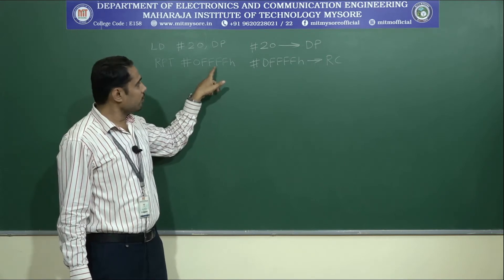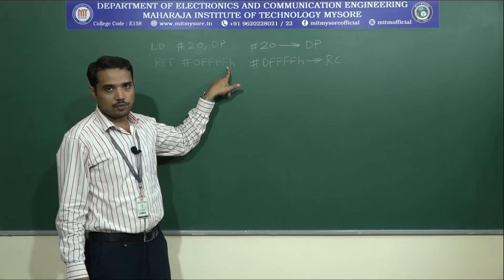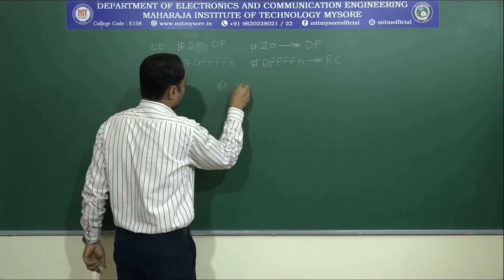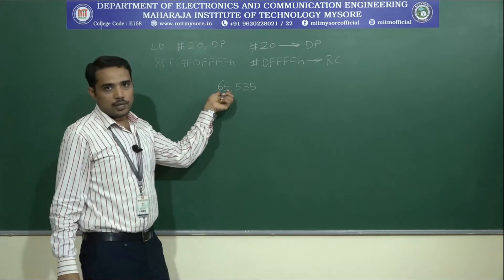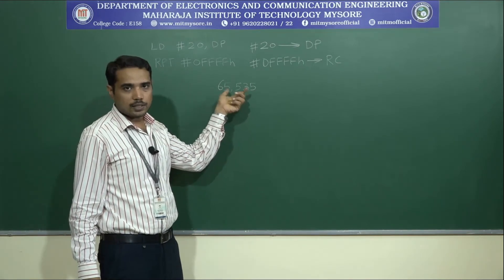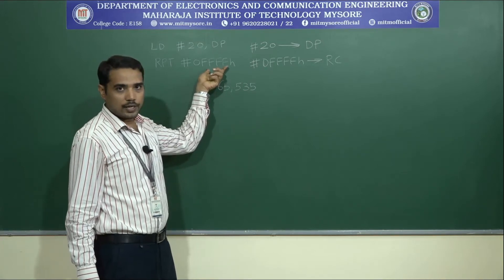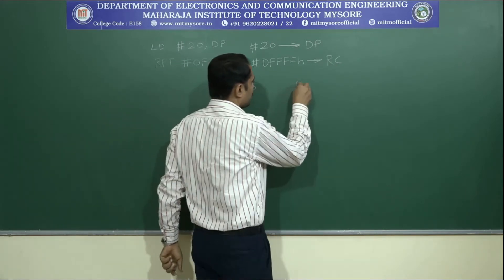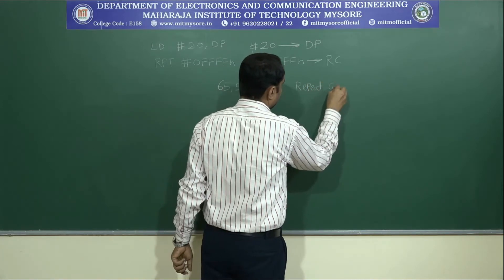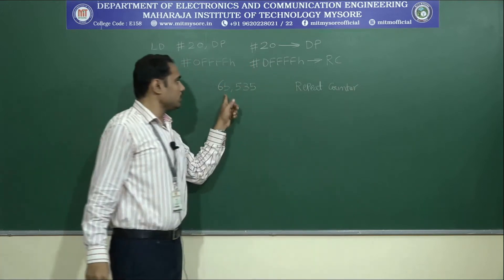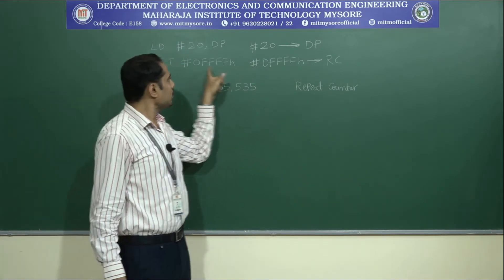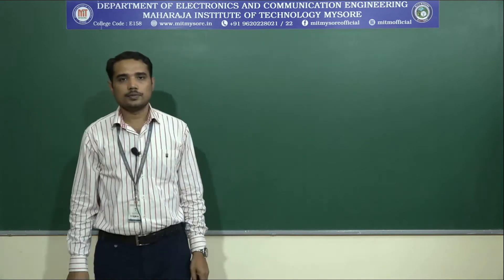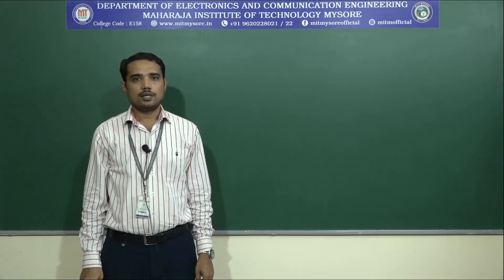By how many times? 0FFH in hexadecimal, which is 65,535 in decimal. We are going to repeat a certain instruction 65,535 times. That immediate value is loaded into the repeat counter — RC refers to the repeat counter. You are loading the value 65,535 in decimal (0FFFFh in hexadecimal) to a register called the repeat counter.